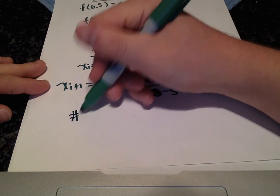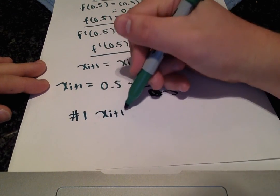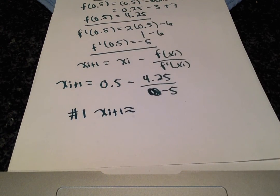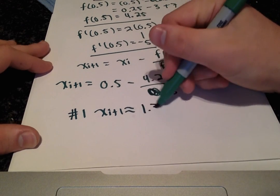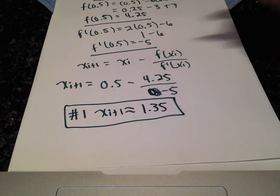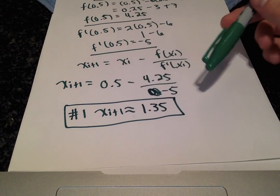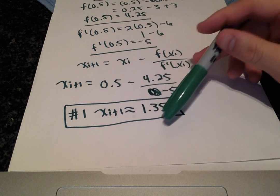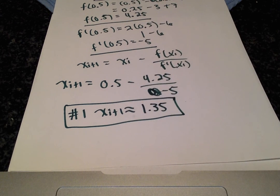which comes out to be approximately 1.35. So this was nice. We didn't even have to chop or we didn't even have to round any of our decimal places because there was only two decimal places for this given value.